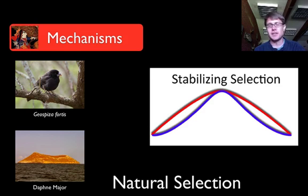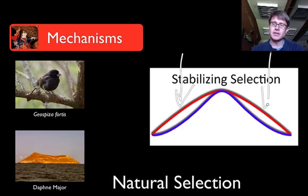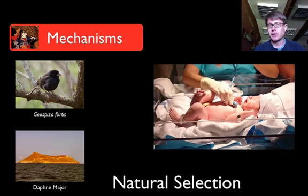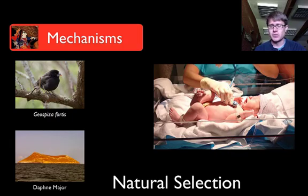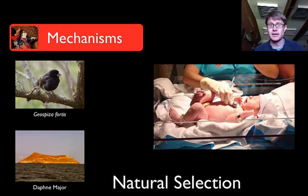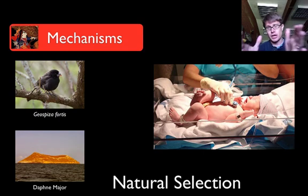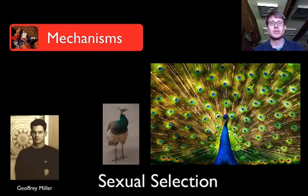The last type of natural selection is stabilizing selection. It occurs when selection happens on either side of the bell-shaped curve, squeezing it closer together. A great example is birth weight in children: if you were born weighing only one pound, you'd likely be premature and die; if you were 18 pounds, you probably wouldn't survive delivery, and her genes would die with you. That pushes the bell-shaped curve together — that's stabilizing selection.